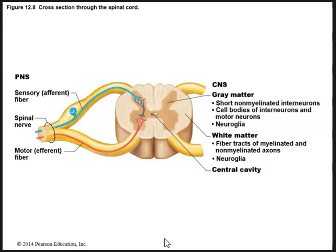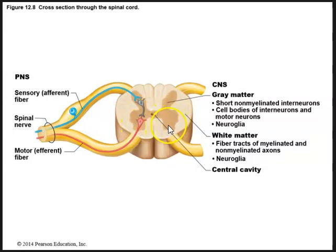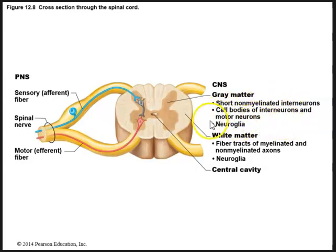In a cross-section of the spinal cord, we have that inner gray matter with its H shape, and here is the central canal. The ventral horns of the spinal cord contain our motor or multipolar neurons. Gray matter has short non-myelinated interneurons as well as cell bodies of interneurons and motor neurons and neuroglia. Surrounding the gray matter within the spinal cord is white matter, which contains the fiber tracts of myelinated and non-myelinated axons as well as neuroglia.